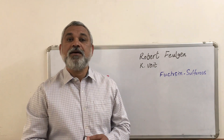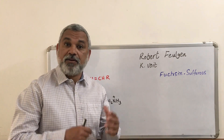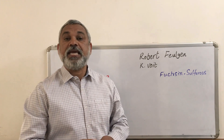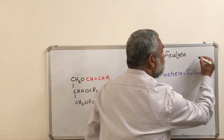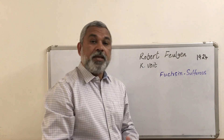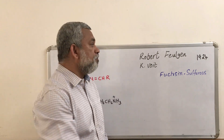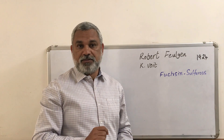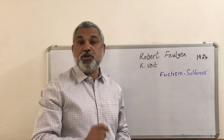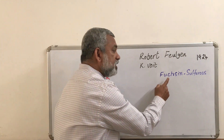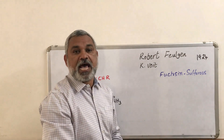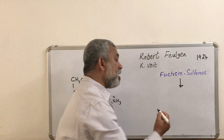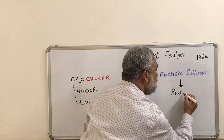We should understand that plasmalogen was initially identified by Robert Feulgen and Kay Voight in 1924. Feulgen had discovered a methodology for staining the cell nucleus — he would treat it with Feulgen sulfurous acid, and the cell nucleus would be stained a kind of red-violet color.